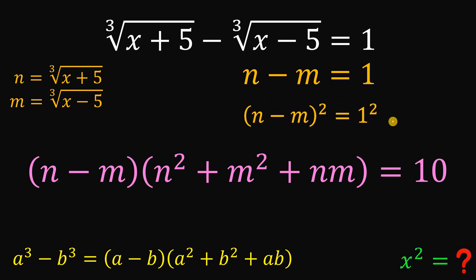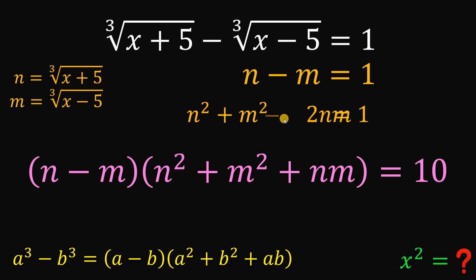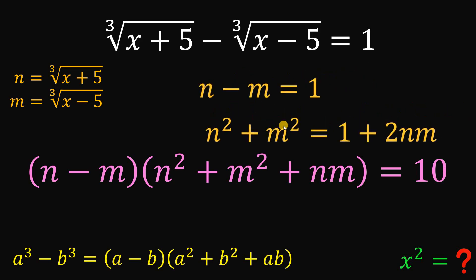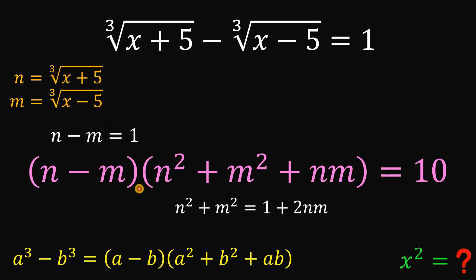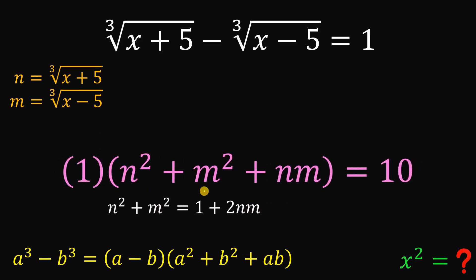If we square the equation n minus m equals 1, we get (n minus m) squared equals 1 squared, which simplifies as n squared plus m squared minus 2mn equals 1. We can now get the value of n squared plus m squared by adding 2mn to both sides, giving us n squared plus m squared equals 1 plus 2nm.